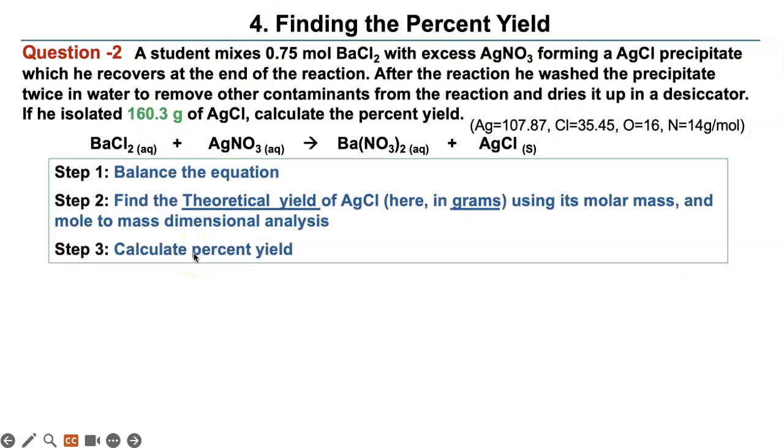So first things first, again you balance the equation. Then you find the theoretical yield. That is the yield that you are supposed to get. And then you do dimensional analysis and calculate the percent yield. So let's read our problem. A student mixes 0.75 moles barium chloride with excess silver nitrate, forming a silver chloride precipitate. See the S, it's a solid, which he recovers or collects at the end of the reaction. After the reaction, he washed the precipitate twice in water and removed other contaminants from the reaction.